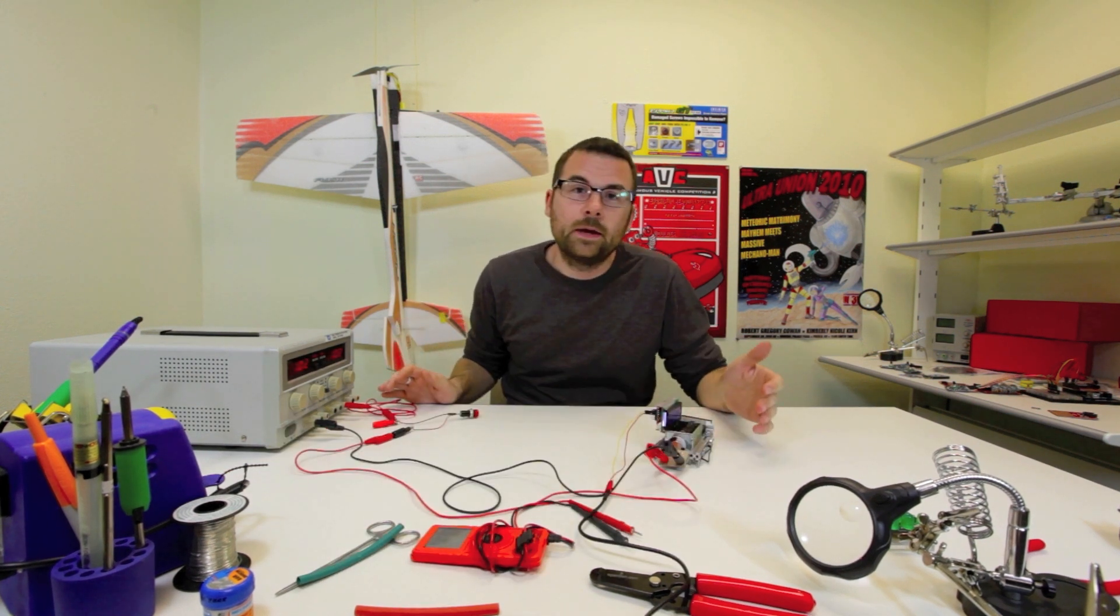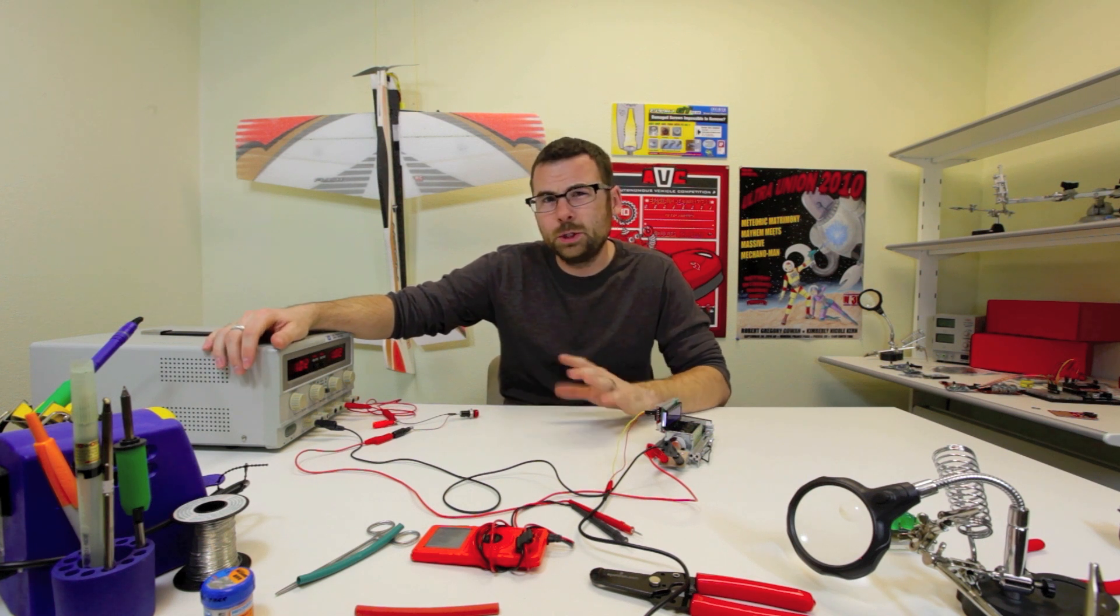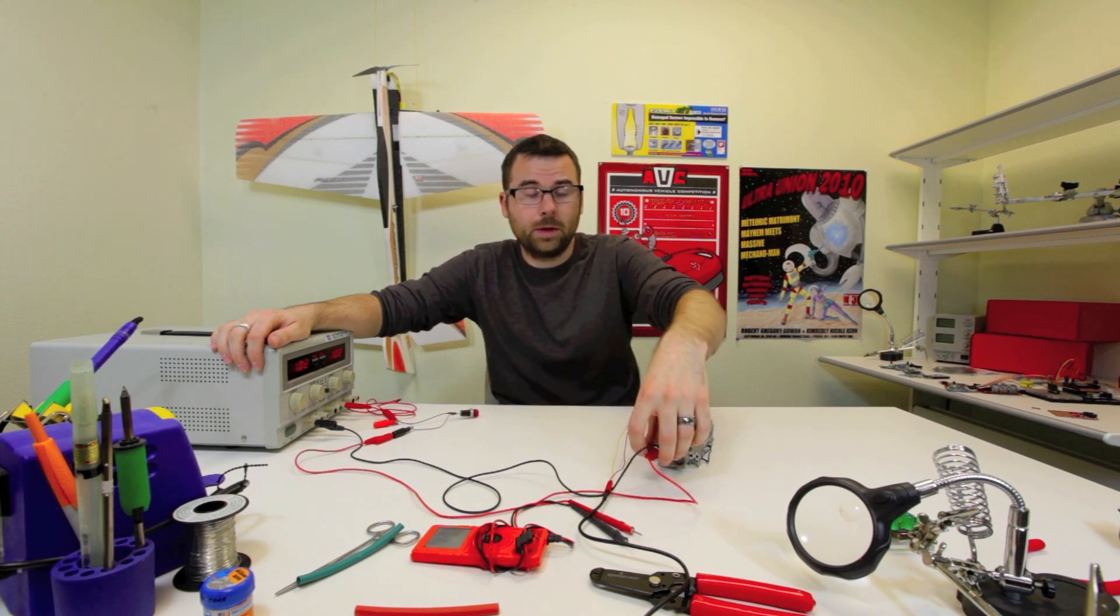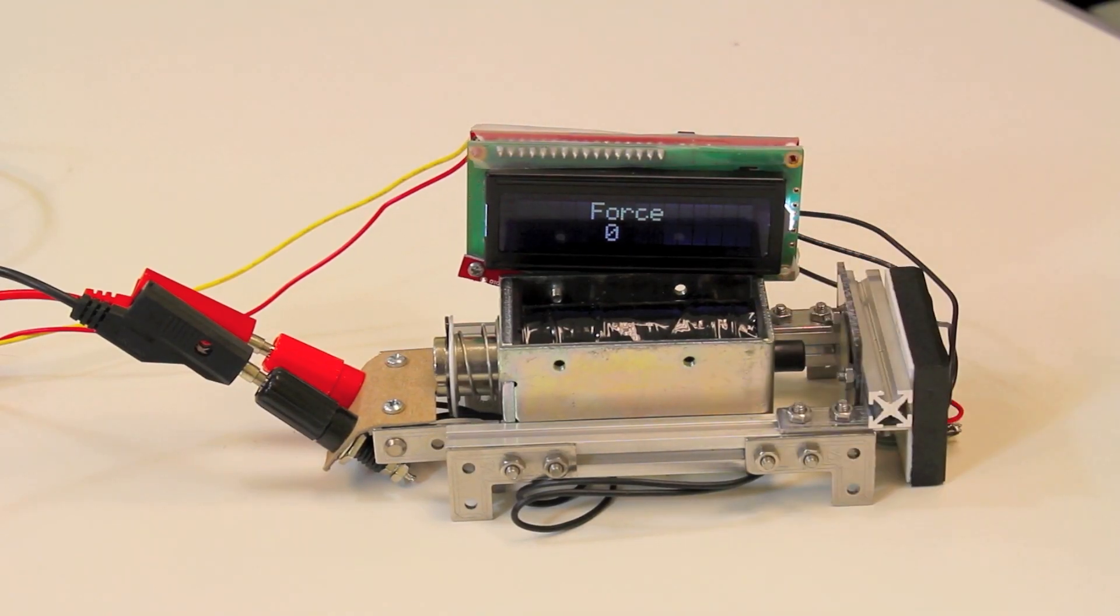Here we've got a little setup to test the solenoid. We've got a benchtop power supply that can provide up to about 38 volts. We've got that plugged in through a switch, plugged directly into the solenoid, and then we've got a force-sensitive resistor at the end of the plunger.